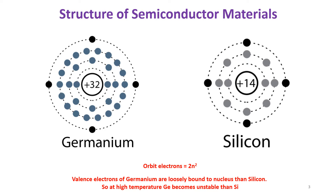As per the expression 2n², the first orbit can have 2 electrons, where n indicates the orbit number — so 2 × 1² = 2. Similarly, for the second orbit, 2 × 2² = 8 electrons. The third orbit can accommodate 2 × 3² = 18 electrons, and the fourth orbit can accommodate 2 × 4² = 32 electrons. But as per the atomic number, since it is 32, the final outermost orbit can accommodate only four electrons.